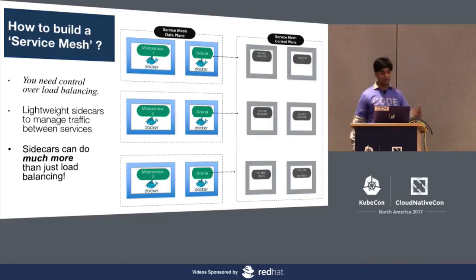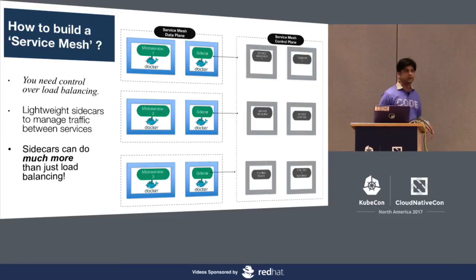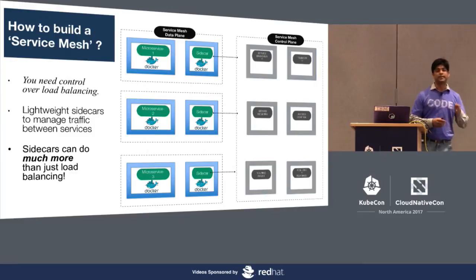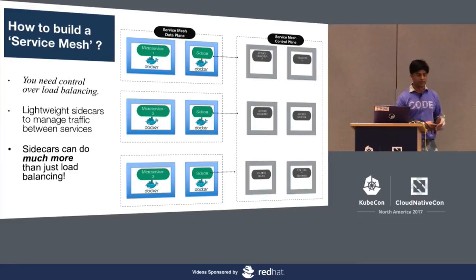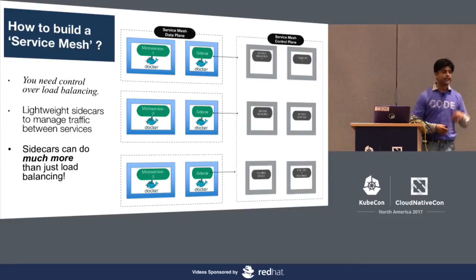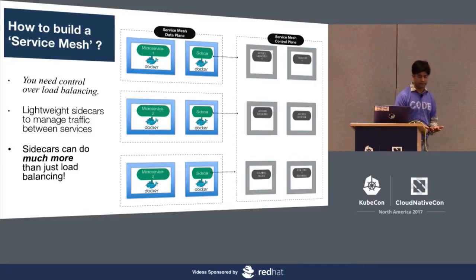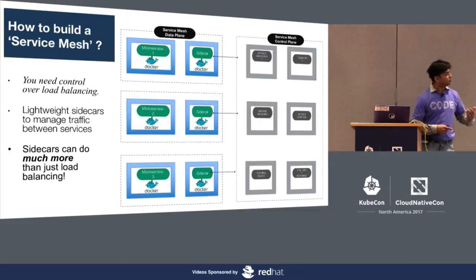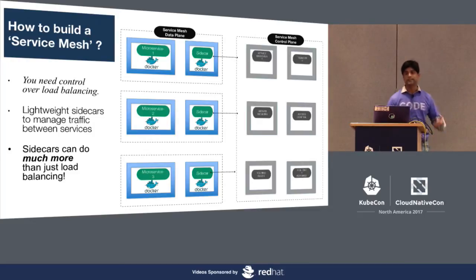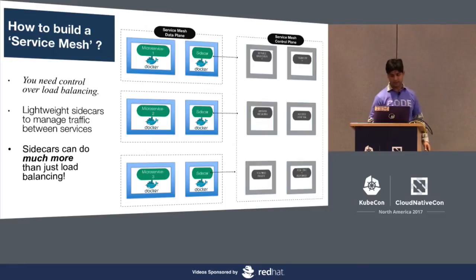How do you actually build a service mesh? Enter sidecars. Sidecars are gatekeepers which sit within your pod along with your microservice, and they are responsible for intercepting every incoming and outgoing traffic. Because they are able to do that, they also provide rich routing, load balancing, plus they collect a lot of data which they can pass to metrics systems.